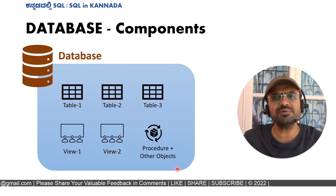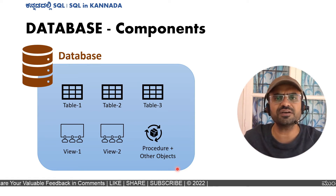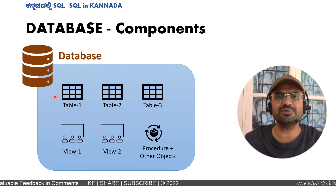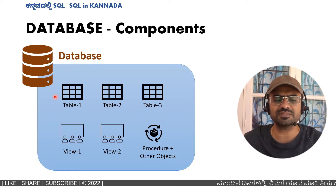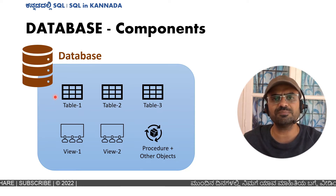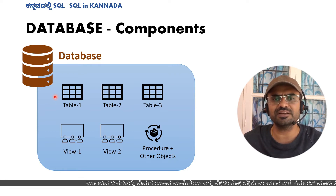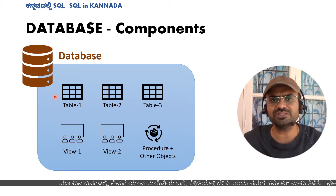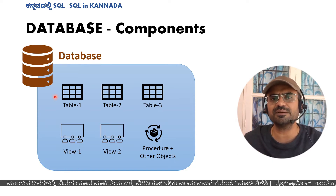If you look at the database components, the database is a higher-level terminology. The database also has different components. For example, tables. Tables can store data physically. For example, employee master data, student master data, or exam results such as UPSC or KPSC exam results. Ultimately, the results are stored in the table. A database can have more than one table, storing different types of data.